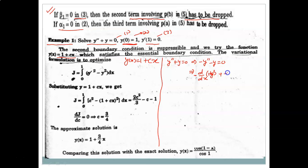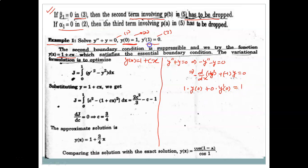The boundary condition y(0) = 1 can be written as 1·y(0) + 0·y'(0) = 1, and y'(1) = 0 can be written as 0·y(1) + 1·y'(1) = 0. These are equations 2 and 3 in standard form.